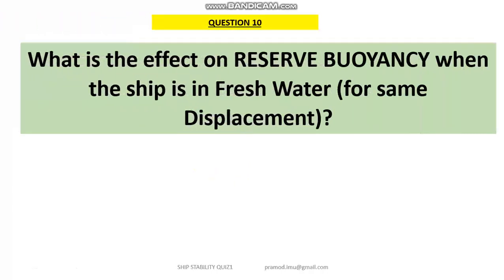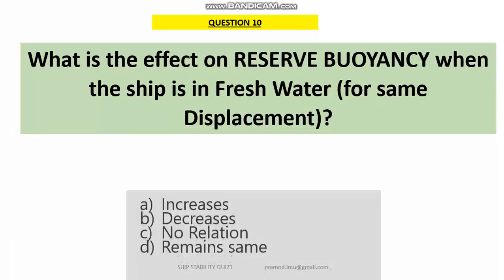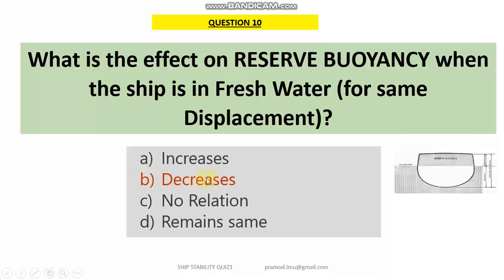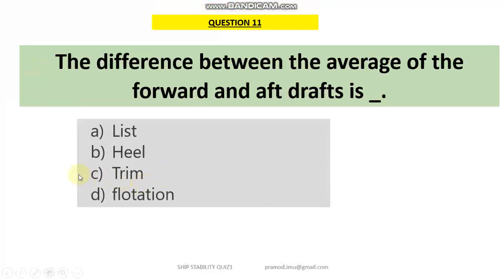Quiz number 10: what is the effect on reserve buoyancy when a ship is in fresh water? Reserve buoyancy is the volume of the intact hull above the waterline. When a ship moves in fresh water its draft will increase, and as a result the reserve buoyancy will decrease. Quiz number 11: the difference between the average of forward and aft drafts is what we call — answer is C — trim.